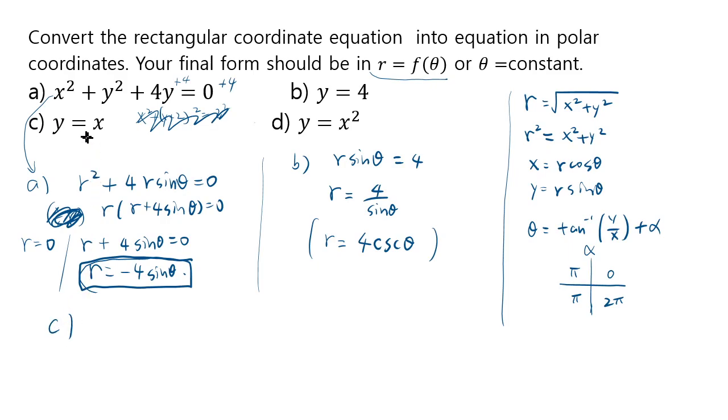What about y equals to x? Y is r sine theta, x is r cosine theta. Again, let's just divide by r. You don't have to worry about that too much. And then you get sine theta equals to cosine theta.